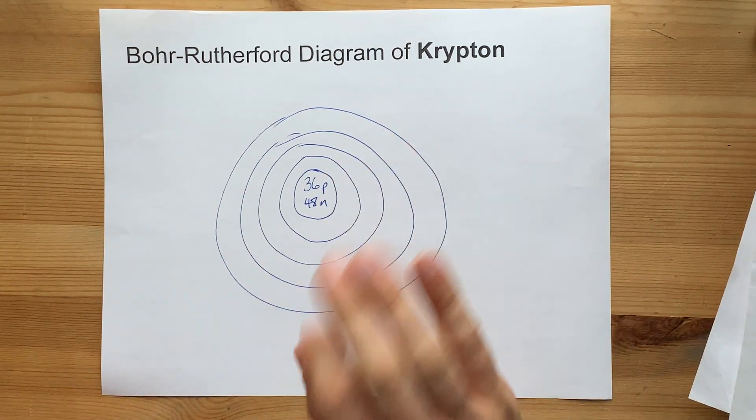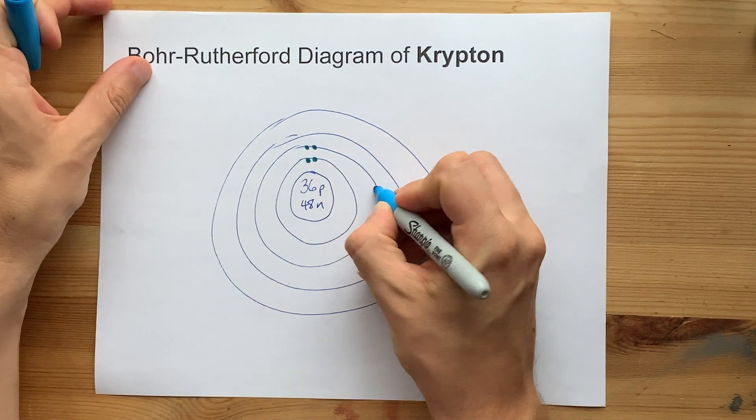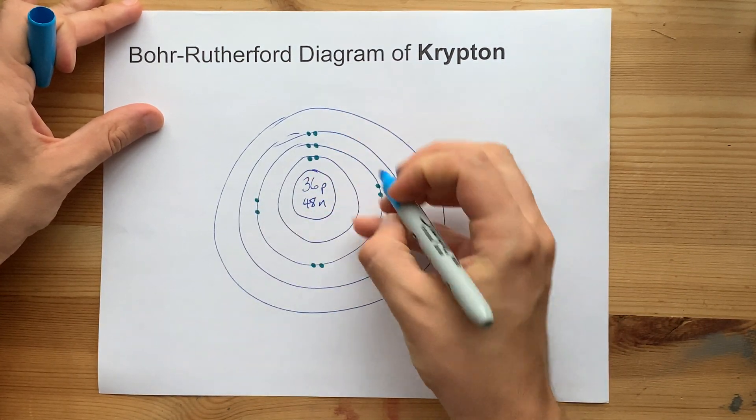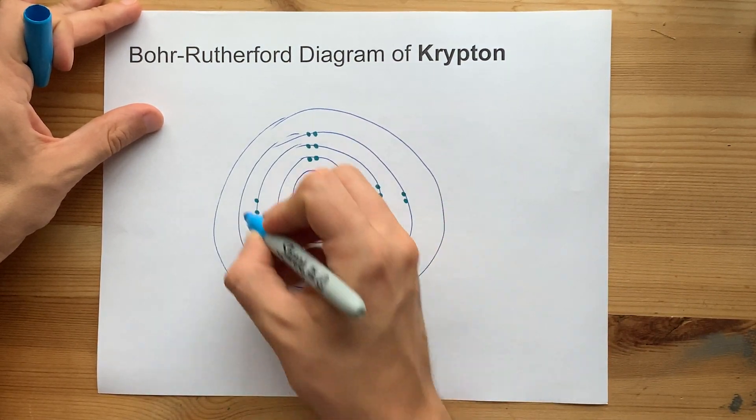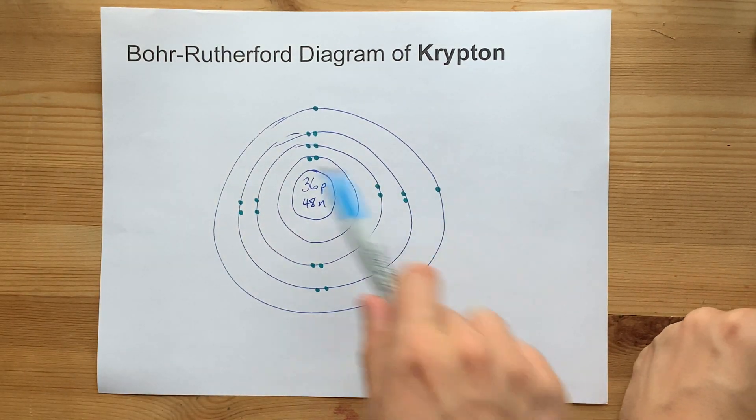The first 20 electrons are as you expect. Two in the first shell, eight in the second. That's all the second shell can hold. Eight in the third, and two in the fourth. That's 20 electrons. This is isoelectronic with calcium.